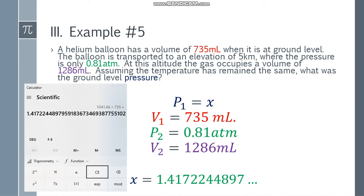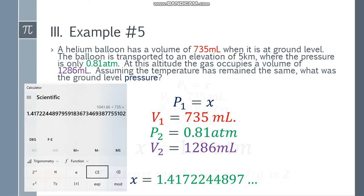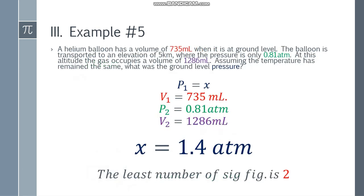Let's check the significant figures. The initial volume 735 has 3, 0.81 has 2, and 1286 has 4 significant figures. So the least number is 2, giving us 1.4. Since the next digit is 1, we round down — as is. The final answer is 1.4 atm.